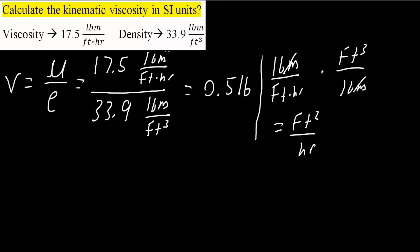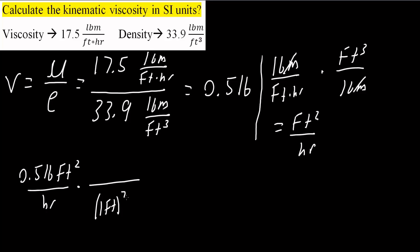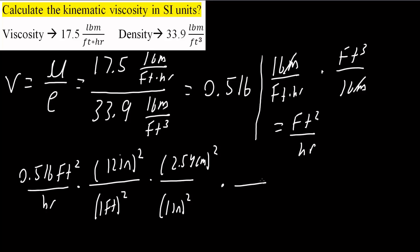We want kinematic viscosity in SI units: meters squared per second. So we need to convert 0.516 feet squared per hour. We know 1 foot is 12 inches, so 1 foot squared is 144 inches squared. Then 1 inch squared equals 2.54 centimeters squared, and 100 centimeters squared equals 1 meter squared.